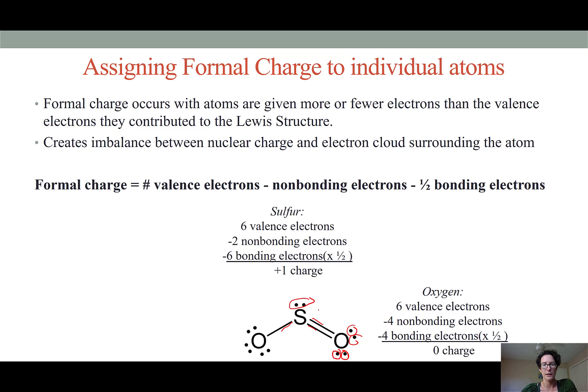Sulfur only gets those electrons half of the time. So we are only going to subtract three electrons for those bonds. We have six valence electrons minus two non-bonding electrons minus six times a half, which would be three, and we end up with a value of positive one. That indicates that our sulfur atom would have a charge of plus one. We'll indicate that by putting our positive next to the sulfur.